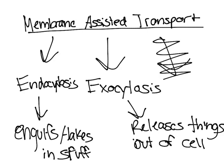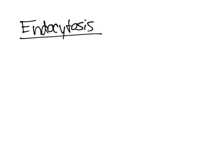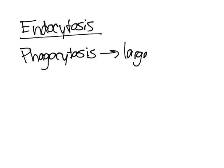There are actually three types of endocytosis. The first is phagocytosis, which is the process of engulfing large solid material into the cell.